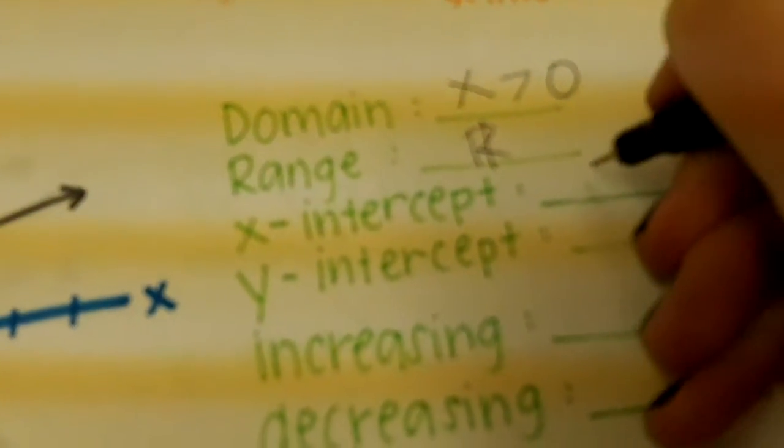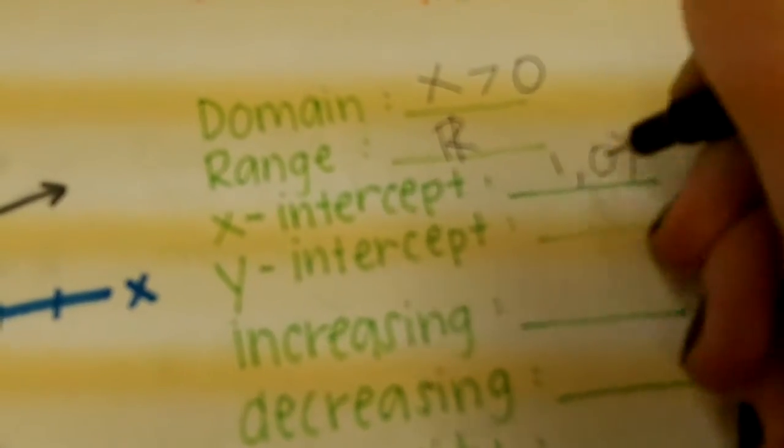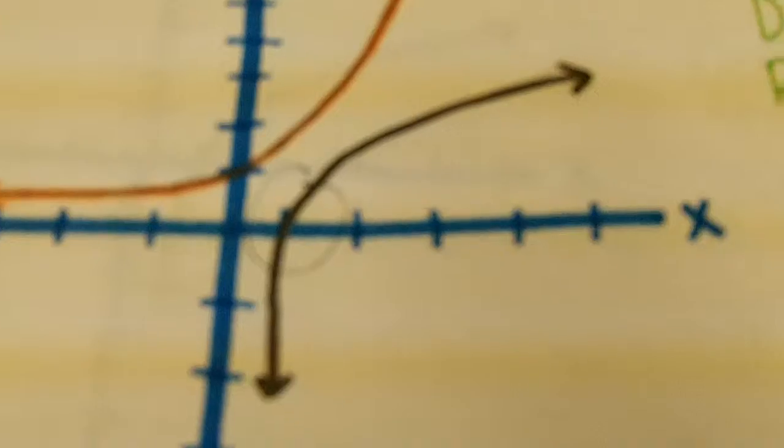The x-intercept is 1, 0. It intercepts right here. The y-intercept is not there. There is no one because there is an asymptote. It is increasing.